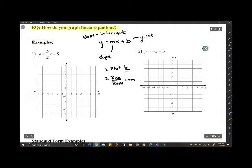In number one, plot b. Well, b is five. So, plot five on the y-axis. b always starts on the y. Always. Then, we look at your slope. It's going to be five over two.